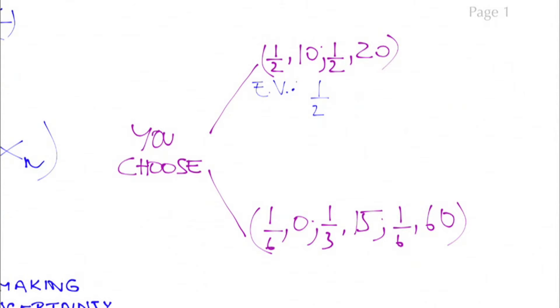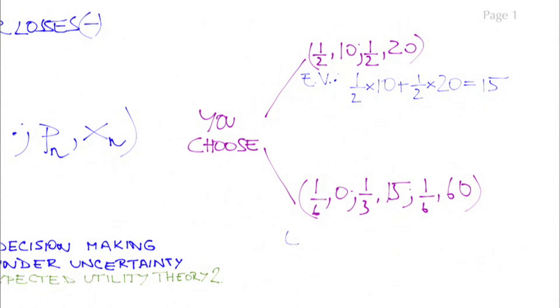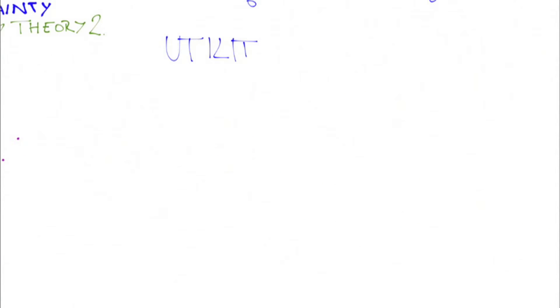A decision maker who uses expected value to compare these choices would be indifferent between them. Though the two lotteries have the same expected values, they are clearly quite different in that the second one is riskier. It has a much lower downside, but a much higher upside too. A decision maker may not be indifferent to risk. And using expected utility instead of expected value allows for incorporating risk preferences into decision making.